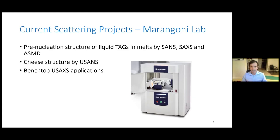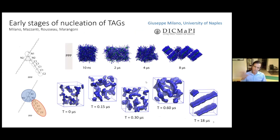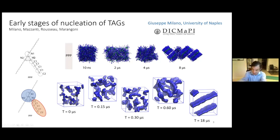Regarding the liquid structure of triglycerides: on the left you can see a tripalmitin triglyceride. In collaboration with Giuseppe Milano from the University of Naples — an expert in atomistic molecular dynamics, one of the best I've seen — it's a project with Gianfranco Mazzanti, Derek Russo, Marengoni, and Giuseppe Milano. He had simulations of tripalmitin crystallizing from an isotropic melt into a lamellar crystal.